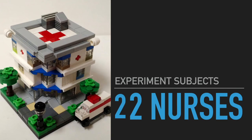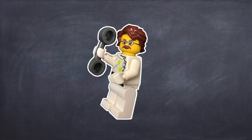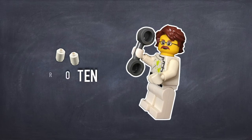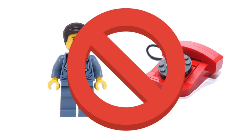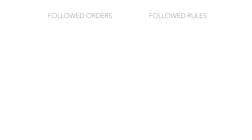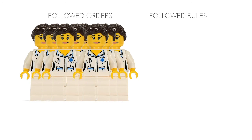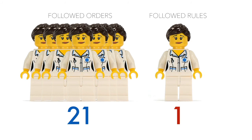The second example is the Hofling Hospital Experiment. In a hospital with 22 nurses, a doctor is actually an actor. The field experiment tests whether nurses will obey orders or rules more. The actor instructs nurses over the phone to prescribe double the recommended amount of a drug — which is actually just a sugar pill. According to the rules, nurses aren't allowed to obey doctor's orders given over the phone. Astonishingly, 21 of the 22 nurses gave the pills to the patients.